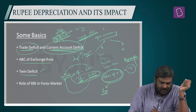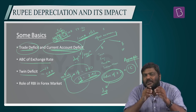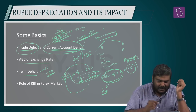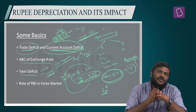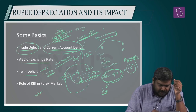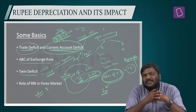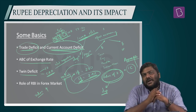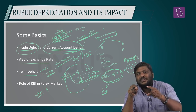Twin deficit means fiscal deficit as well as current account deficit. In 2013, India suffered from twin deficit — very high current account deficit and very high fiscal deficit. Since India is a net importer, the value of imports is higher than the value of exports, leading to a huge dollar outflow. Whenever rupee depreciates, the import value of crude oil prices starts increasing. India has historically been a major importer of crude oil, and whenever international crude oil prices increase or rupee depreciates, this puts a lot of pressure on forex reserves.